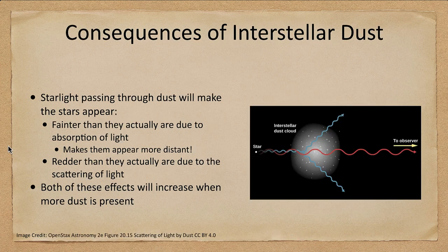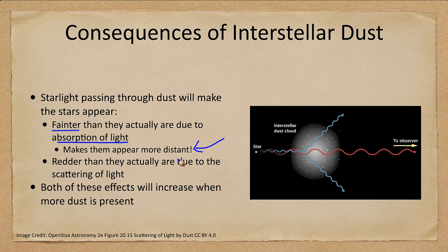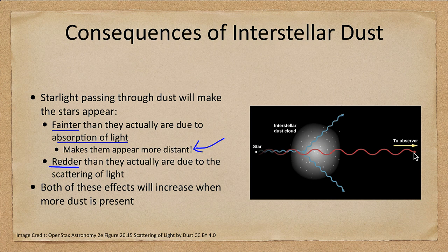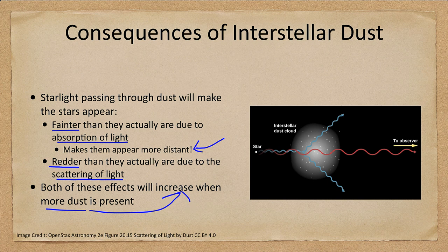Let's summarize what dust does to starlight. It does two things: it makes stars appear fainter than they actually are because of the absorption of light, which means they look more distant — if something appears fainter we think it's further away. So if we don't take dust into account, we will overestimate distances. It also makes stars appear redder than they would otherwise, because blue light is scattered away and the red light tends to make it through. The more dust there is, the more pronounced these effects, and the more we must account for it when determining distances.